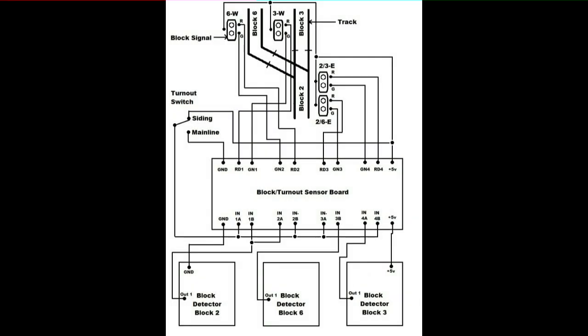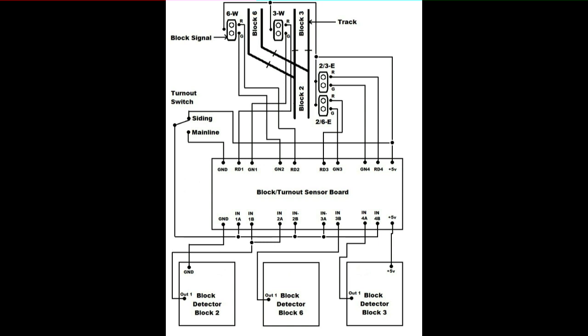The next block diagram is more complicated. It includes a block turnout sensor board, which would only be used if you wanted to use a turnout to also control how the block signals behaved around the particular turnout. The upper part of the block diagram shows a track section with a turnout and blocks from the west side of my demo layout. The left side shows a turnout switch which is part of the turnout — in this case a PECO PL13 accessory switch. The main line contact is connected to ground and the siding contact is connected to plus 5 volts.